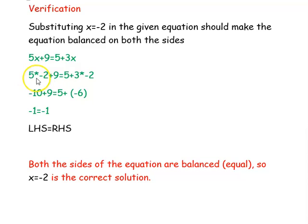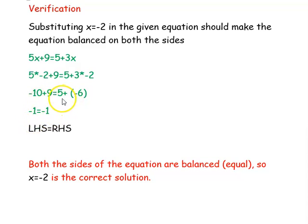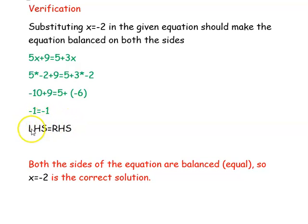Now we are simplifying. 5 into minus 2 is minus 10, plus 9 is minus 1. And on the right hand side, the plus and minus will become minus, so 5 minus 6 equal to minus 1. Both sides equal minus 1, so the equation is balanced. x equal to minus 2 is the correct solution.